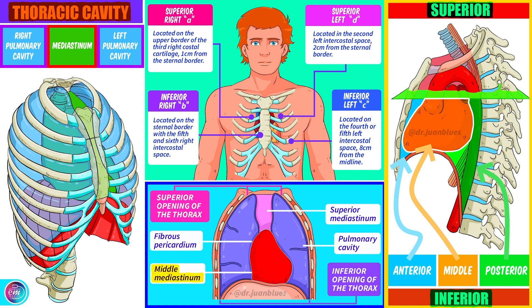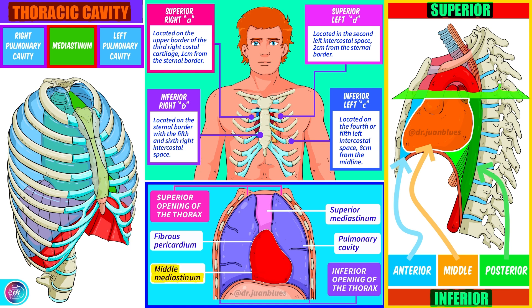Now that we know its central location in the thoracic cavity, we should add that the heart can project itself externally in four points, which mark the precordial area of the heart: superior right, inferior right, superior left, and inferior left. These points may vary depending on the constitution of the person. In general, the superior right point is on the upper border of the third costal cartilage, one centimetre from the sternal border. The inferior right point is on the sternal border with the fifth and sixth right intercostal space. The inferior left point is on the fourth or fifth left intercostal space, eight centimetres from the midline. The superior left point is in the second left intercostal space, two centimetres from the sternal border.